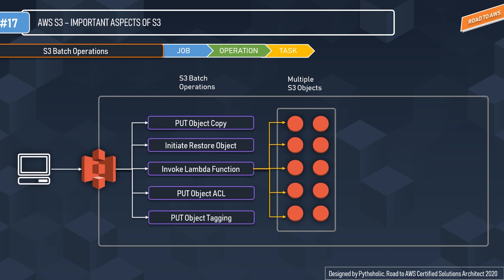The second operation is put object tagging. A tag is a key-value pair and you can associate tags with objects in bulk — this sets the supplied tag set on objects that already exist in the bucket. You must have permission to perform the S3 PutObjectTagging action; by default the bucket owner has this permission and can grant it to others. The third operation is put object ACL, which sets the Access Control List permissions for an object already existing in the bucket.